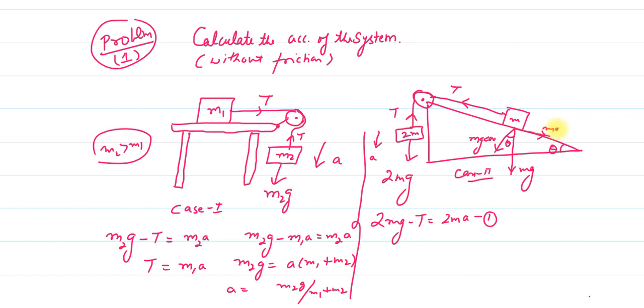The component becomes mg sin theta. This is an inclined plane at angle theta with the horizontal. Tension is going up, but the force going down along the incline is mg sin theta.